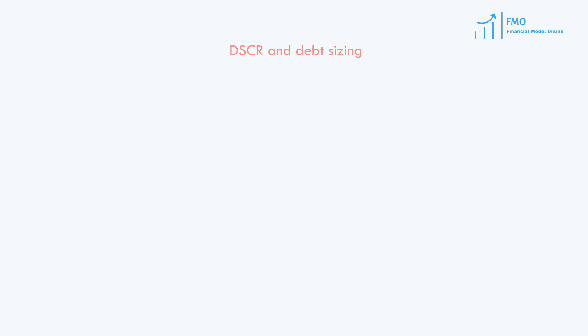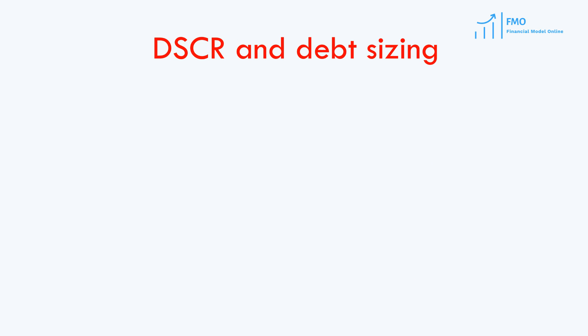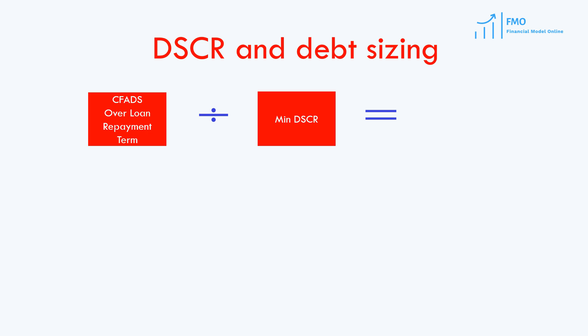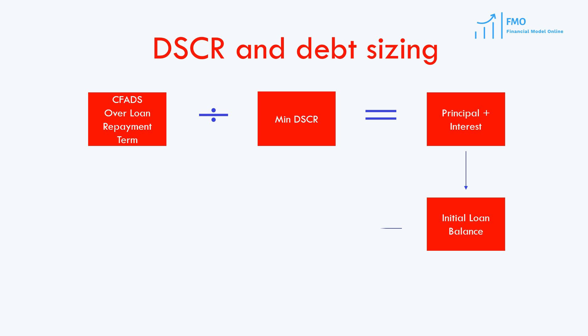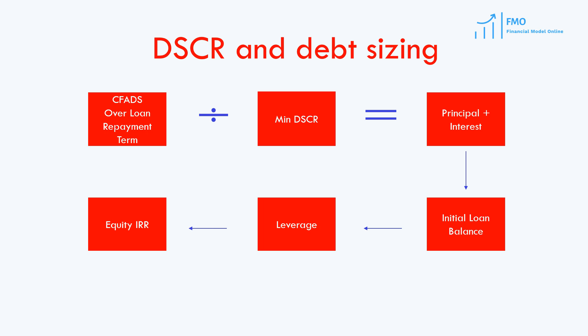At the stage of projections and financial modeling, the minimum required DSCR determines the debt size, the project's leverage, and therefore equity valuation. CFADS over the loan repayment term divided by the minimum required DSCR is equal to the debt principal and interest payments. This comes from our definition of DSCR. Taking the present value of those principal and interest payments will give us the initial loan value, which determines the leverage of the project and, hence, equity IRR.